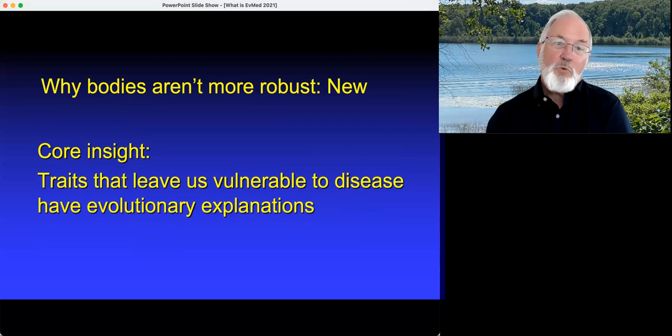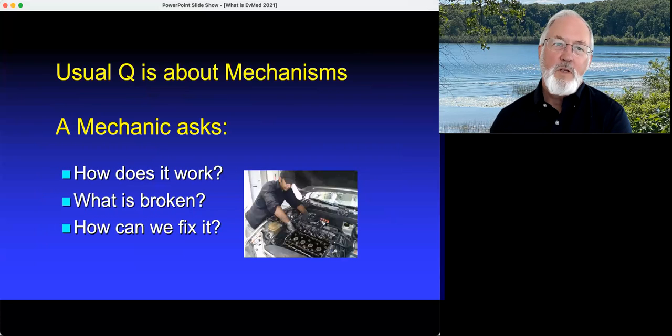But the other question is why bodies aren't more robust. This is a new area of inquiry, and we're just getting going and figuring out the best ways to frame and test hypotheses in this area. The core insight here is that traits that leave us vulnerable to disease need evolutionary explanations. It's a shift from a mechanics view of life, which is the standard for most medics. That is, most mechanics ask, how does it work?